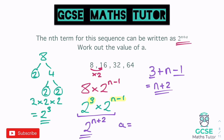We can test this: for n=1, it's 2 to the power of 3, which is 8. For n=2, it's 2 to the power of 4 — then 2 to the 5, then 2 to the 6. You can test those on a calculator and you will get the actual numbers in the sequence.